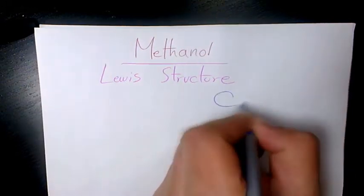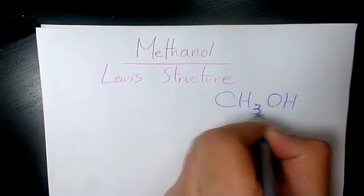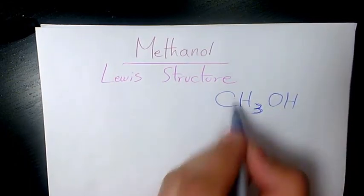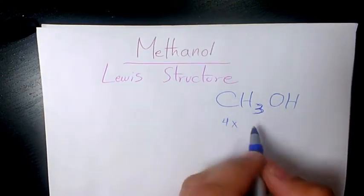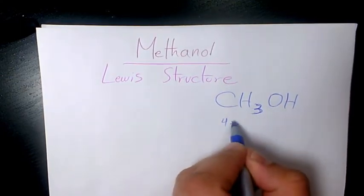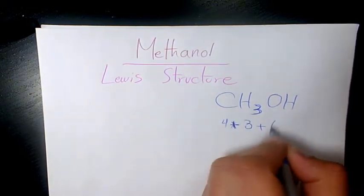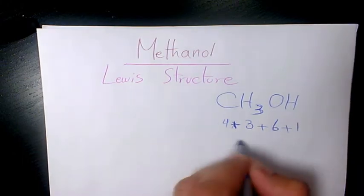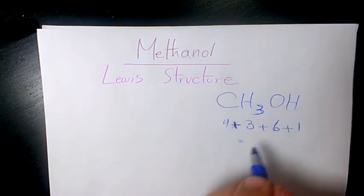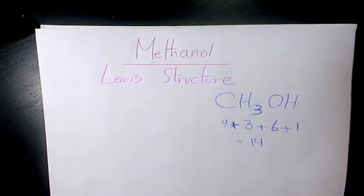Methanol is CH3OH. We need to find out the number of valence electrons. Carbon has 4. Hydrogen has 1, so we have 3 of them, that's plus 3 times 1, which is 3. Plus oxygen has 6, and hydrogen has 1. So it's going to be 4 plus 3 is 7, plus 7, which gives us 14 valence electrons.